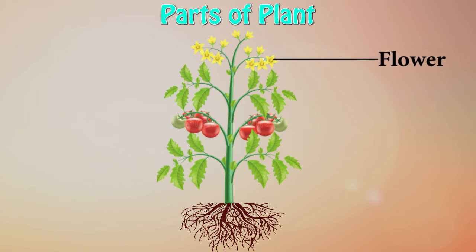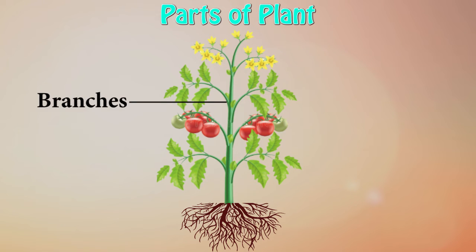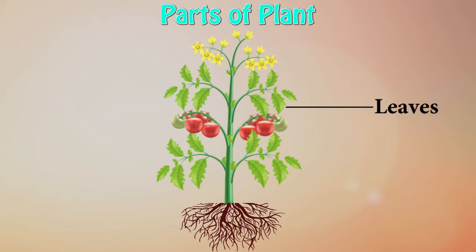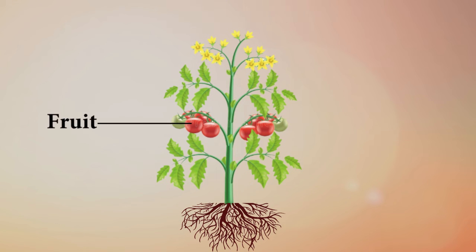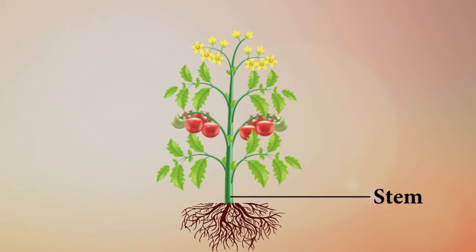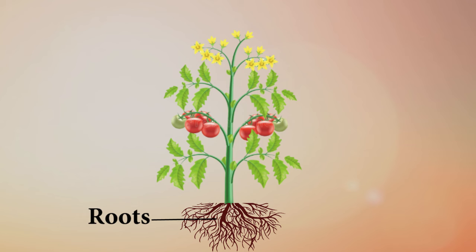The parts of a plant include: flowers, branches, leaves, fruits, stems, and roots.